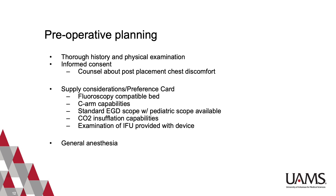We recommend placement under fluoroscopic guidance, and a fluoroscopy-compatible bed as well as C-arm capabilities must be ensured. A standard EGD scope and endoscopic tower are needed, and we recommend an easily accessible pediatric scope in the case of a large intraluminal lesion that is unable to be passed with the standard scope. We recommend carbon dioxide insufflation, as this is more readily absorbed by the GI tract mucosa and is associated with less post-procedure pain. The IFU card provided with the stent should be carefully examined to ensure proper usage and indications. We recommend general anesthesia for this procedure, as this facilitates easier placement, protects the airway from possible aspiration, and allows for concurrent bronchoscopy if needed.